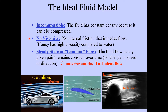We're also going to assume that the fluid has no viscosity. Viscosity is internal friction that impedes the flow of fluid. Honey is a very viscous fluid — it has high viscosity compared to water. If you try to pour honey out of a jar, it could take minutes for that honey to flow out, whereas water, because of its low viscosity, will flow out very quickly.